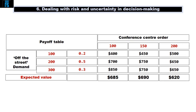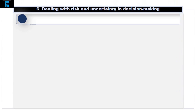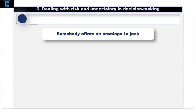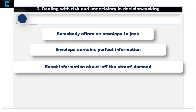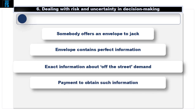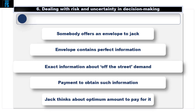Imagine Jack is poised to make his decision — let's say based on expected values, the risk neutral choice — and is about to agree to supply the conference centre with 150 sandwiches regularly, with an expected value of $690. The phone rings. A disguised voice says, meet me in the car park in 10 minutes. Jack goes and meets a man in the shadows clutching an envelope. The man says: in this envelope is some perfect information — it will tell you exactly, with no doubt, what off-the-street demand will be. However, you'll have to pay to obtain this information. Jack thinks: once he knows what's in the envelope, he can supply the optimum amount to maximise his contribution.